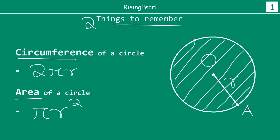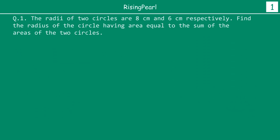So now with these two in our mind, let's take a look at some questions and how we solve them. The radii of two circles are 8 cm and 6 cm respectively. Find the radius of a circle having area equal to the sum of the areas of the first two circles. Clearly the first thing is that we don't have any figure given, so we have to pay extra attention to make sure we draw the figure appropriately. So let's go back and read the question one more time.